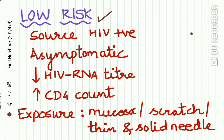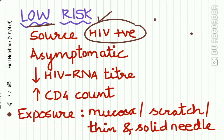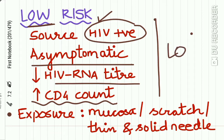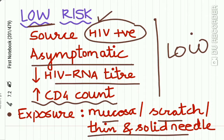A patient is considered low risk if the source of infection is HIV positive and after exposure the patient remains asymptomatic with a low HIV RNA titer and increased CD4 count. The exposure may occur through mucosa, through a scratch, or through contact with a thin and solid needle.